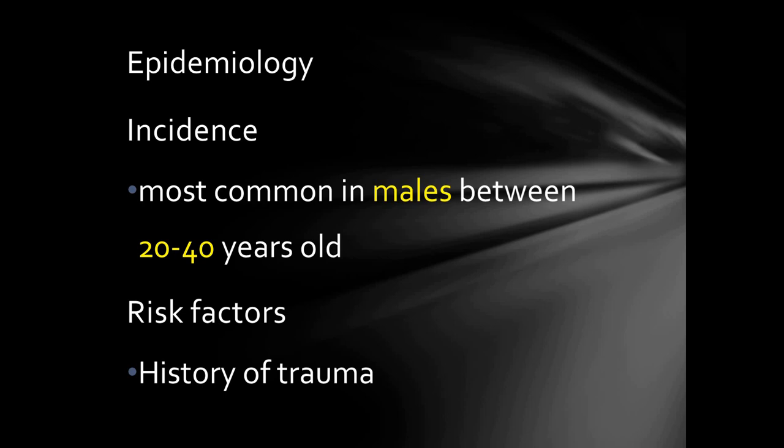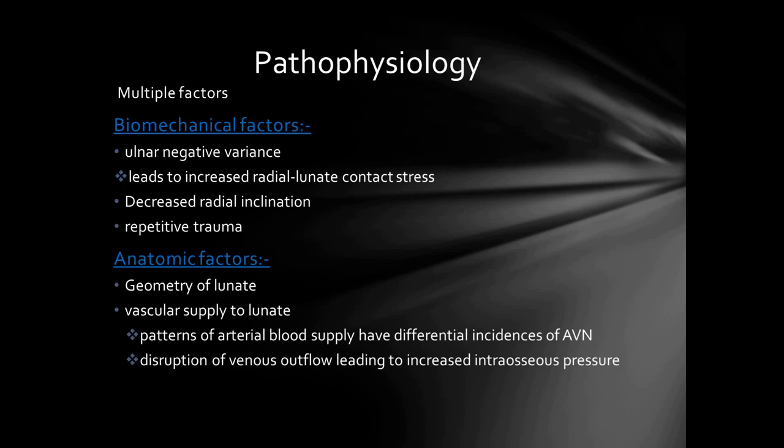There may be a history of trauma, either single trauma or multiple repetitive micro trauma. In the pathophysiology of Kienböck's disease, two factors are involved: biomechanical factors and anatomical factors. In the biomechanical factor, there may be ulnar negative variance which leads to increased radiolunate contact stress, decreased radial inclination, and repetitive micro trauma.